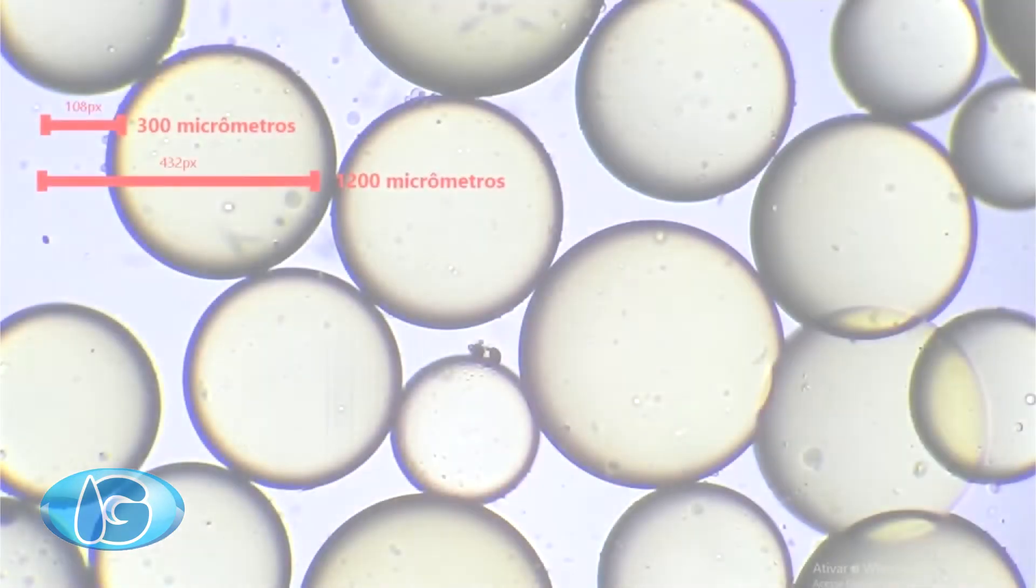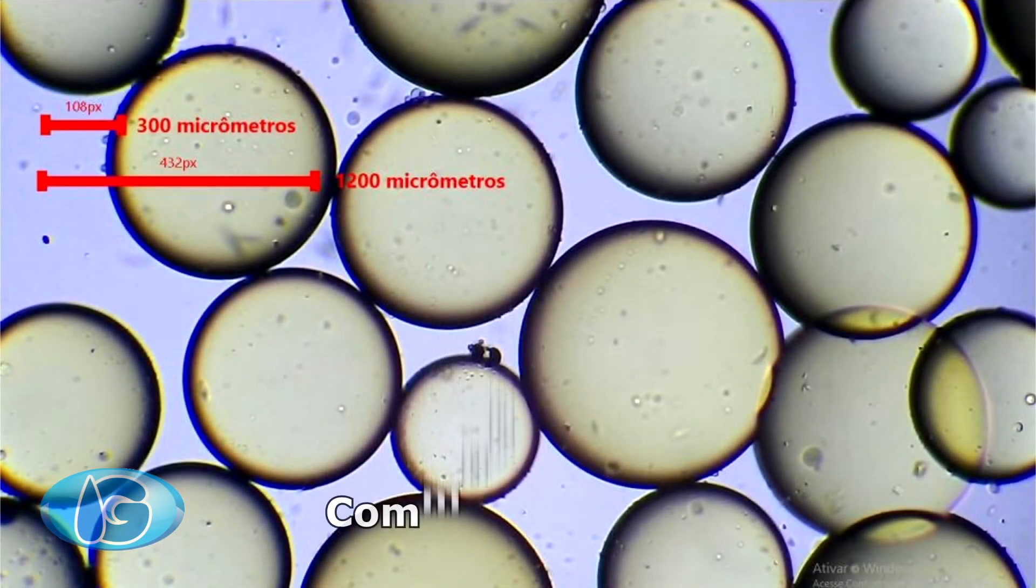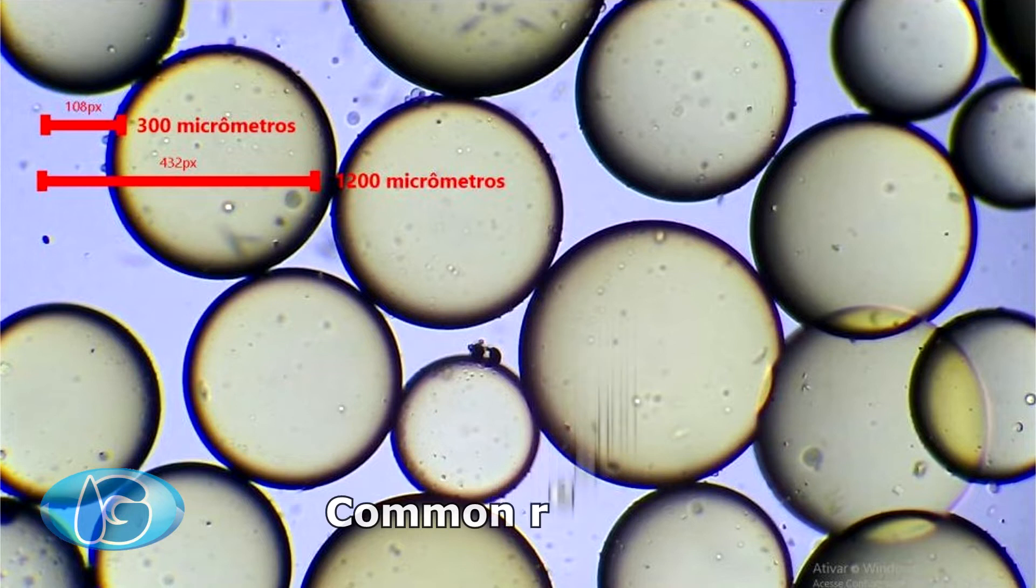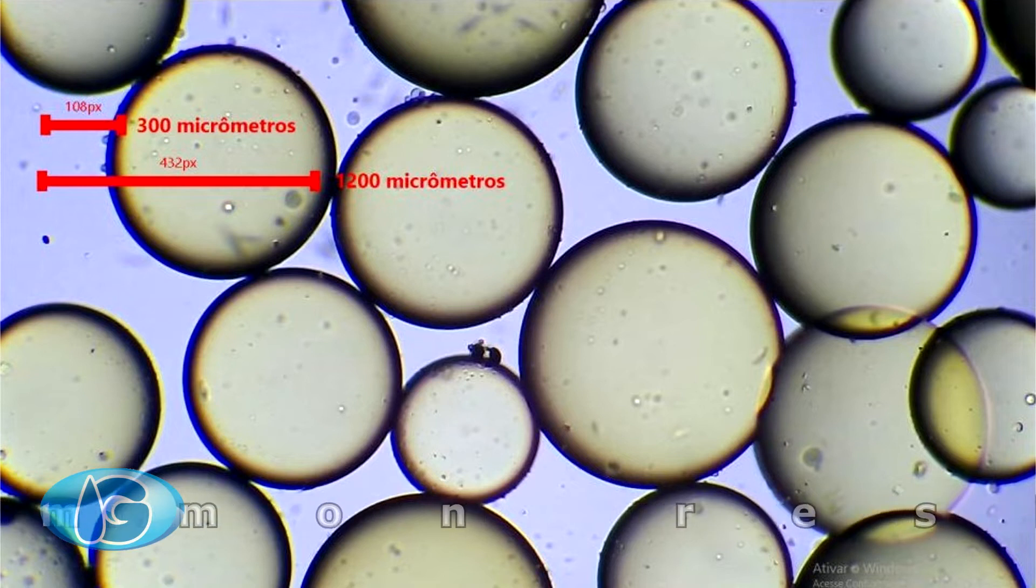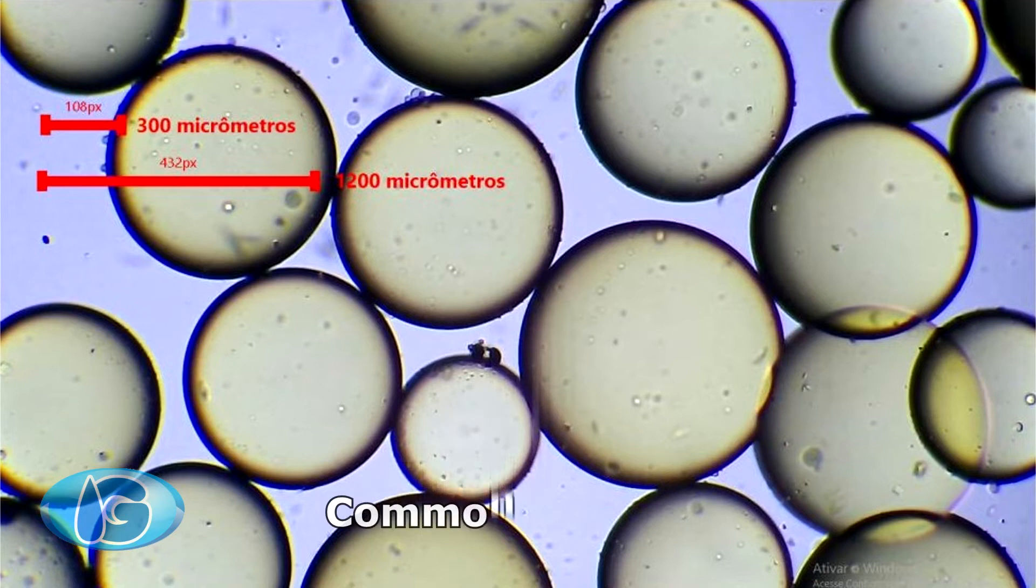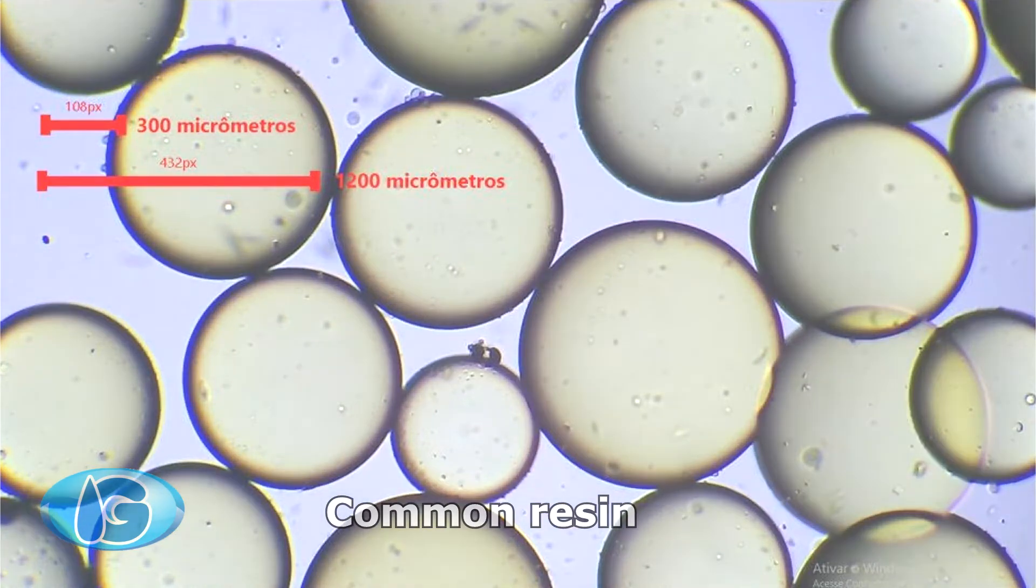We started this study showing a common SAC resin, it's a non-uniform grade, it's a common grade. You see the variation between diameters of these spheres. In this grade of resin, diameter varies between 300 micrometers and 1200 micrometers. Therefore, there is a large variance between diameters.